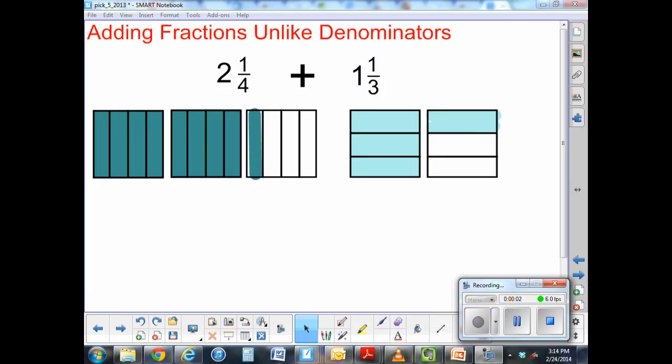Hi, today I'm going to be adding mixed numbers with unlike denominators using area models. The problem I have here is 2 and 1/4 plus 1 and 1/3.